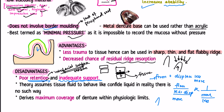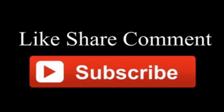Further disadvantages: this theory assumes that tissue fluid acts like a confined liquid, but in reality that is not practically the case. It derives maximum coverage of the denture within the physiologic limit. Also, the impression material should record every detail of the mucosa without distorting it, so the complete denture fits all minute elevations and depressions. However, mucosa is not static for 24 hours, so there will be differences in position that alter these details. That was all about mucostatic theory — I hope you found this video helpful. Please like, comment, share, and subscribe.